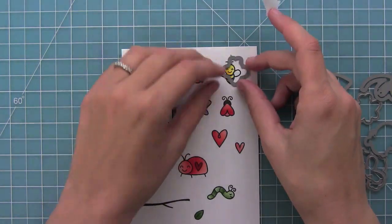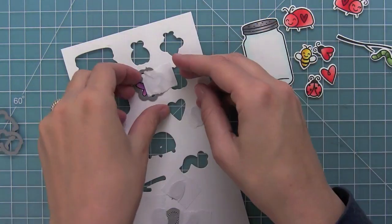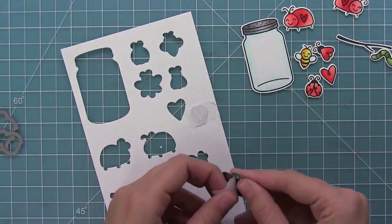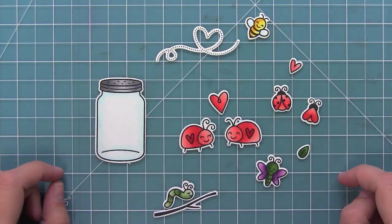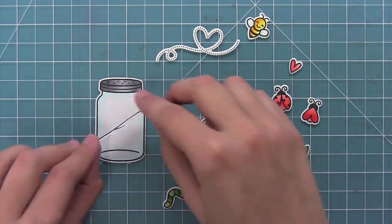And I like to use some low tack tape like post-it note tape to hold them in place, run them through my die cut machine, and then pop them right out. And you can see how perfect they look here. I just think it's so adorable when they're all cut out.